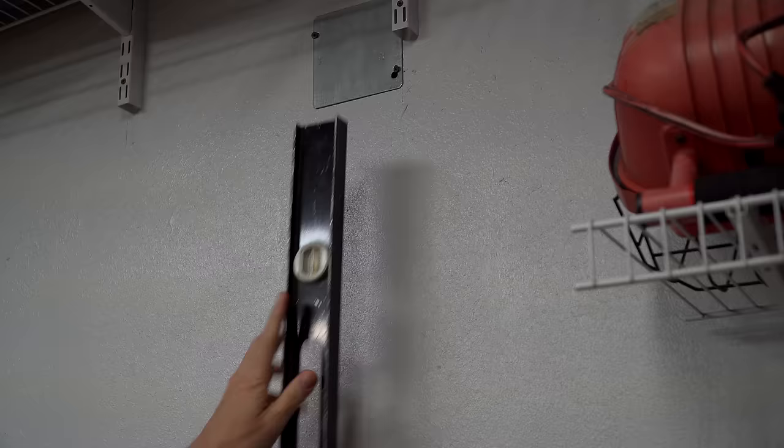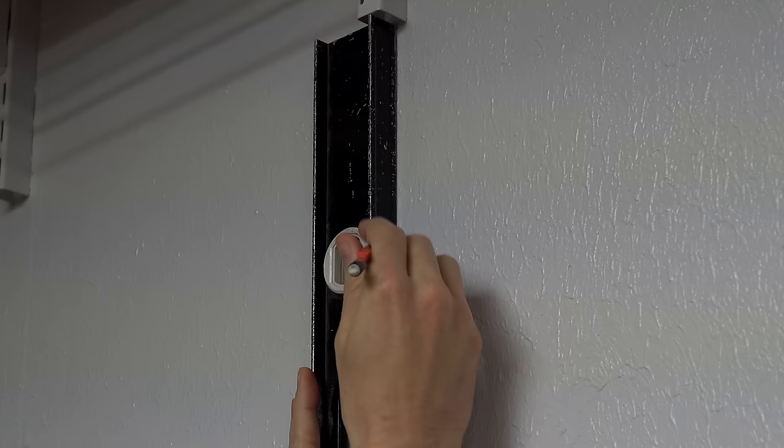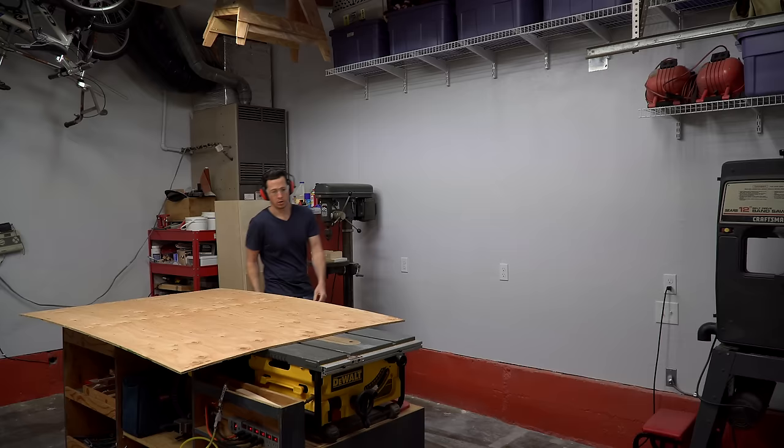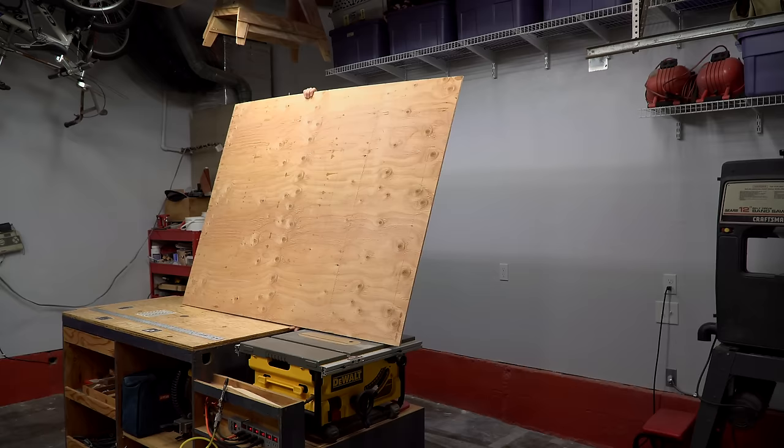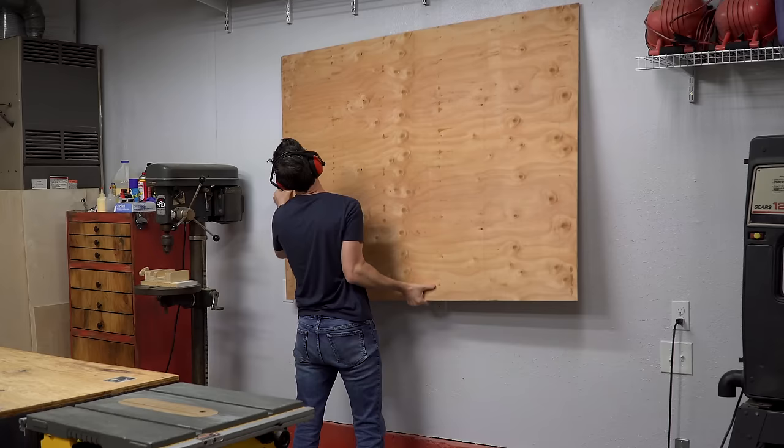I then made some extra large marks to help me align the board on the wall. I got the board aligned as closely as I could with the marks I drew, and then fired a few brad nails to hold it to the wall.